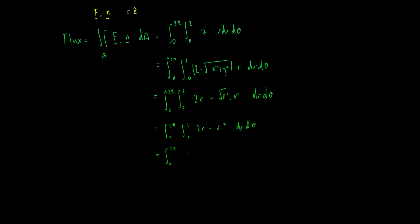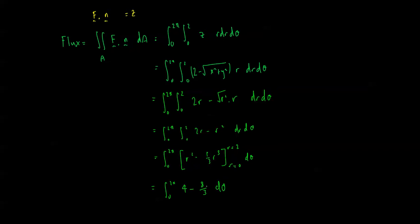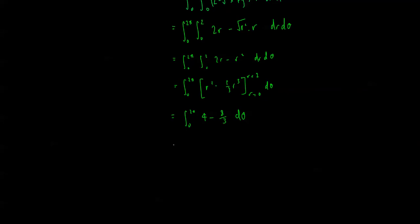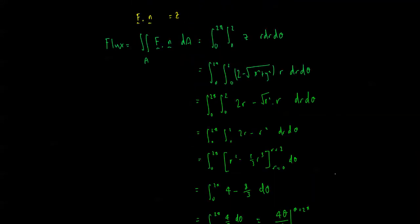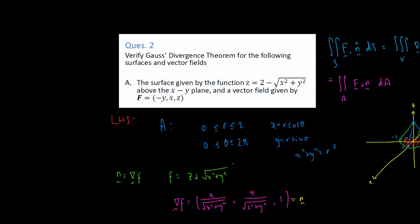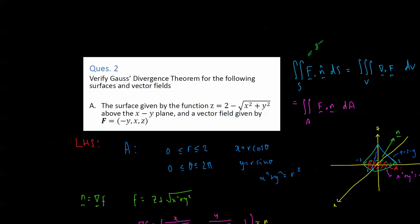Evaluating the inner integral: we get [r² minus (1/3)r³] from r = 0 to r = 2. Substituting: 4 minus 8/3. Since 4 times 3 is 12, minus 8 gives 4, so it equals 4/3. The flux integral then becomes the integral from 0 to 2π of (4/3) dθ, which equals (4θ/3) evaluated from 0 to 2π, giving 8π/3. So the flux integral on the left-hand side equals 8π/3.